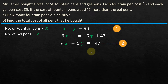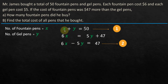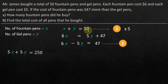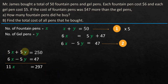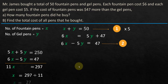Now we are going to use the elimination method — adding or subtracting the equations to find the values of x and y. I can see 6x and 5y here. To match the y terms, I multiply the first equation by 5: 5x plus 5y equals 250. Then write the second equation below: 6x minus 5y equals 47. Adding these two: 5x plus 6x gives 11x, and 5y minus 5y cancels to zero. So 11x equals 250 plus 47, which is 297. Therefore x equals 297 divided by 11, which is 27.